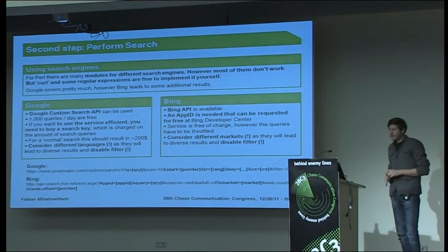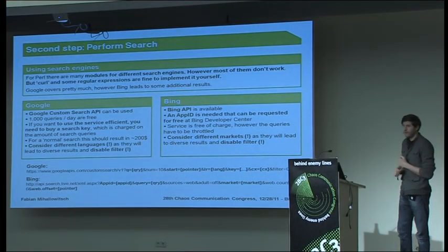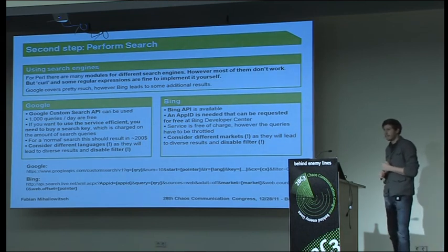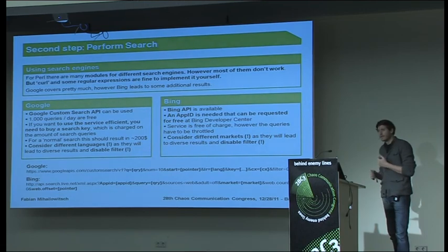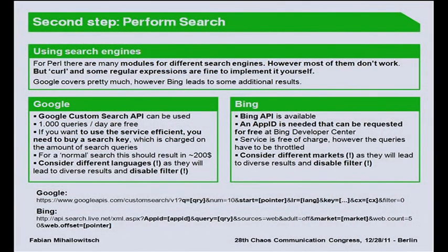You have to decide whether to rotate services or throttle queries. If you get 100,000 or 200,000 results and throttle by just one second, you'll end up running the tool for days or even weeks, so you should try to rotate services. For search engines in Perl, there are many modules but sadly none of them really worked — many were quite deprecated. Using Perl and regular expressions you can easily implement the search engines yourself. Google provides the Custom Search API — you can do 1,000 queries per day for free, but that won't be sufficient for a real search. To use it efficiently you have to buy a search key, which is charged per query. For a normal list of 250 keywords it results in around $200.